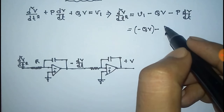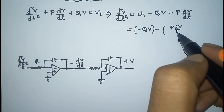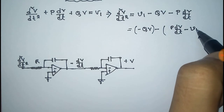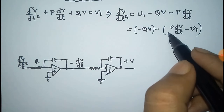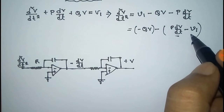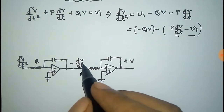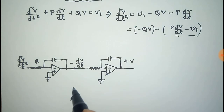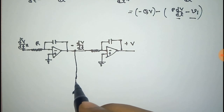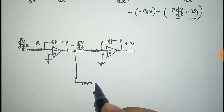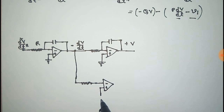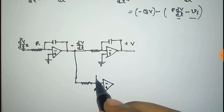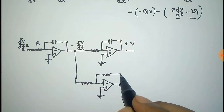We can rewrite the equation as: minus q·v minus p·dv/dt minus v1. This is the addition of q·v, p·dv/dt, and v1. This term represents the addition of p·dv/dt and v1, so for this we need an adder op-amp to add dv/dt and v1. The adder op-amp goes to the inverting terminal.